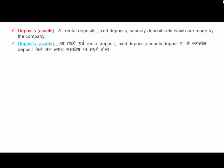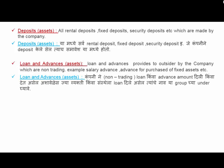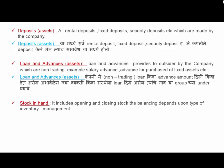Second subgroup under Current Assets is Loans and Advance Assets — loans and advances provided to outsiders by the company which are non-trading, for example salary advance given or advance for purchase of fixed assets. Stock in Hand includes opening and closing stock, and the balance depends upon the type of inventory management.